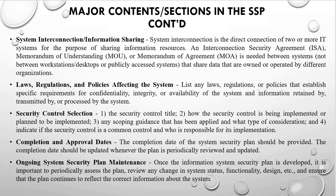Then we have the system interconnection and information sharing section. System interconnection is the direct connection of two or more IT systems for the purpose of sharing information resources. An interconnection security agreement (ISA), Memorandum of Understanding (MOU), or Memorandum of Agreement (MOA) is needed between systems that share data owned or operated by different organizations. Another section covers laws, regulations, and policies affecting the system — this is where you list the federal or organizational laws, standards, and regulations relating to that particular information system.